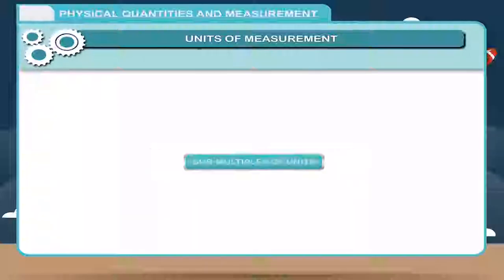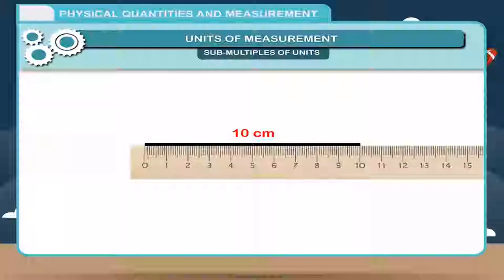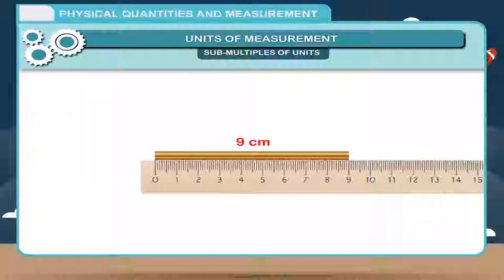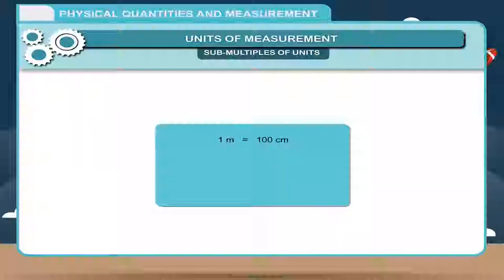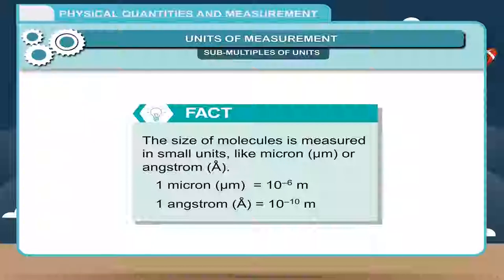Submultiples of units: Submultiples are the factors used to create smaller forms of units. Sometimes we have to measure smaller lengths, then we use submultiples of units. For example, to measure the length of a small wire, we measure in centimeters or millimeters. 1 meter is equal to 100 centimeters; 1 meter is equal to 1000 millimeters; 1 centimeter is equal to 10 millimeters. Fact: The size of molecules is measured in small units like micron or angstrom. 1 micron equals 10⁻⁶ meters; 1 angstrom equals 10⁻¹⁰ meters.